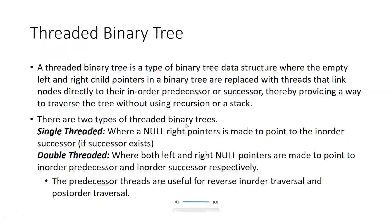We will learn about threaded binary tree. A threaded binary tree, as the name itself says, is a type of binary tree where the empty left and right child pointers are replaced with threads that link nodes directly to their in-order predecessor or successor, thereby providing a way to traverse the tree without using recursion or a stack.